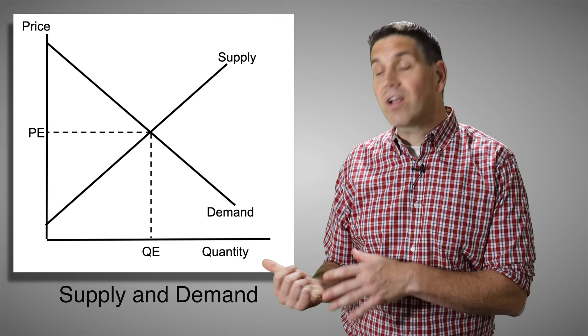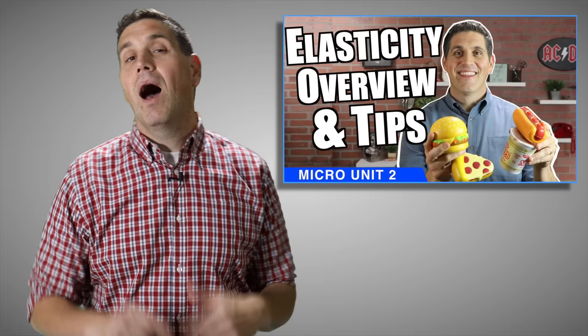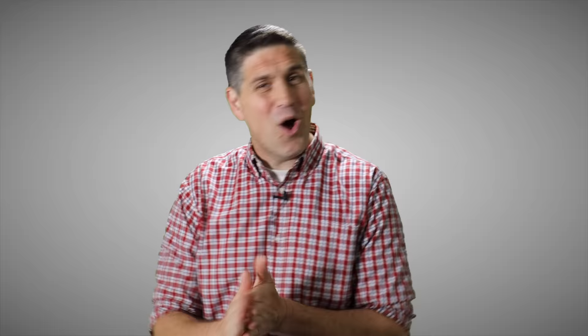Everything covered with supply and demand is in microeconomics unit two. There's another concept you have to know called elasticity, but it's not really a graph — it's calculation stuff. I have free videos on YouTube that explain the details. Now we're jumping into the graphs you learn in unit three. There are a lot of them and they look totally different than anything you've seen in macroeconomics or any other economics class. This is pure micro.